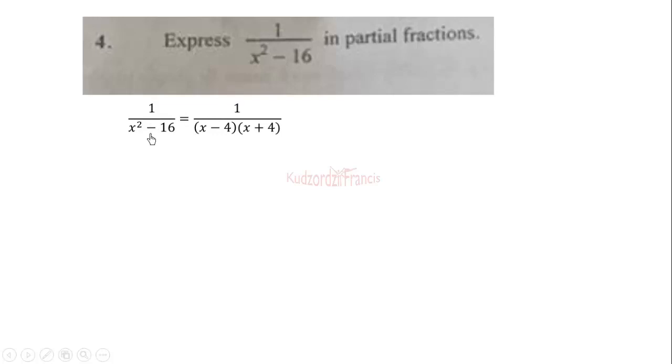We know 1 over x squared minus 16 is the same as 1 over (x minus 4)(x plus 4). We use difference of 2 squares. You know x squared minus 16 is the same as x squared minus 4 squared, and that will give us this factorization.